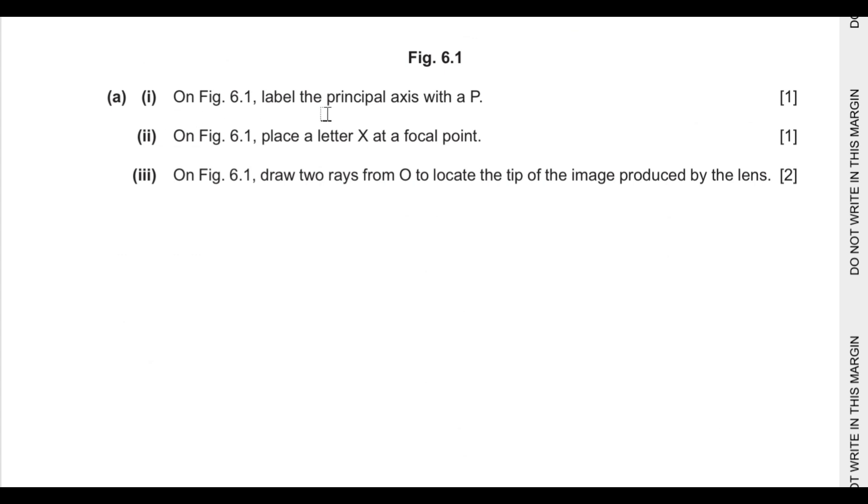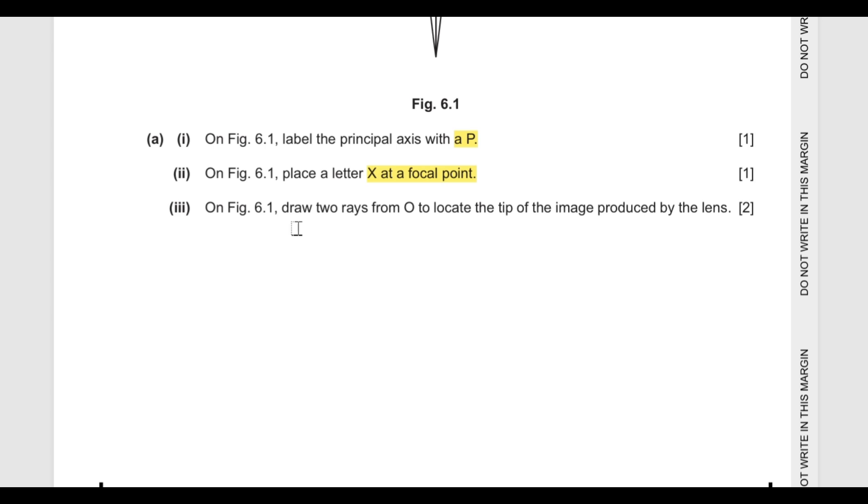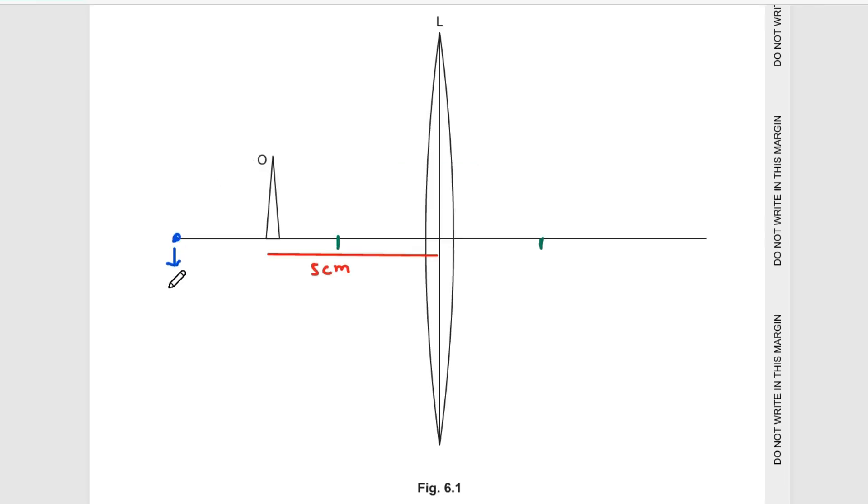Part A says on figure 6.1 label principal axis with a P, place a letter X at focal points, and draw two rays from O to indicate the tip of the image produced by the lens. So I am naming this principal axis as P and these two points are focal points so I am naming them X. To draw the image, the line which is parallel to principal axis after reaching the lens will converge and pass through focal point. And the line which passes through center of the lens goes undeviated. And this point is our image.